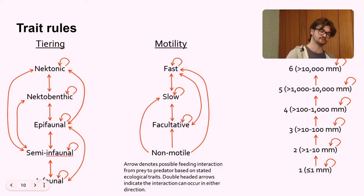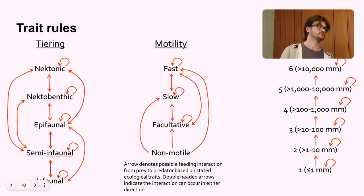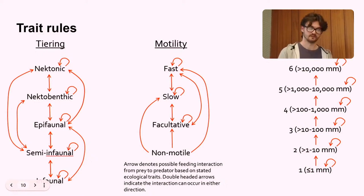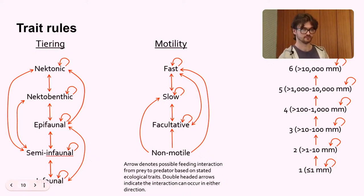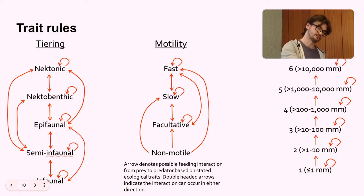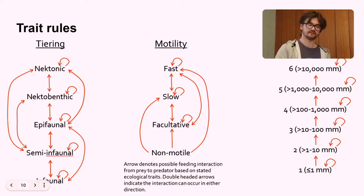So this looks a little confusing, but these are the trait rules. So this is the interactions that were allowed to happen within my food webs. So the arrows point from prey to predator, or double-headed arrows indicate it can occur in either direction. So for tiering, an infaunal organism can interact with infaunal, semi-infaunal, and epifaunal organisms. Whereas nectonic organisms can interact with infaunal organisms. And so on.